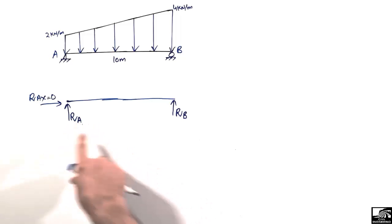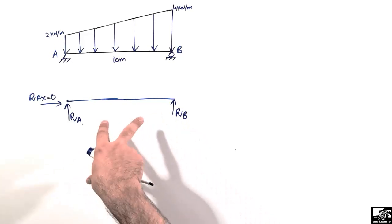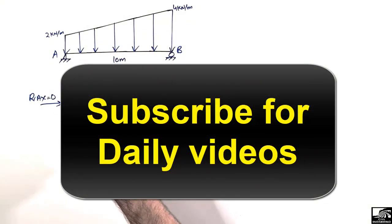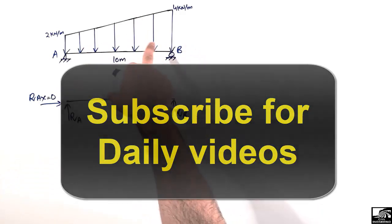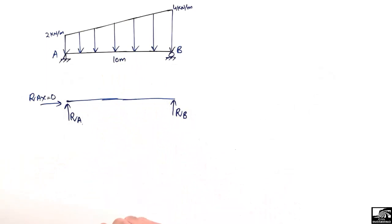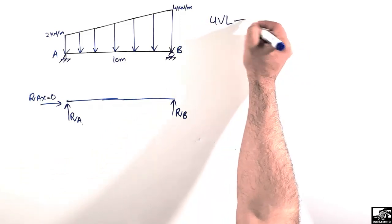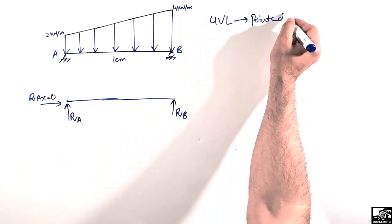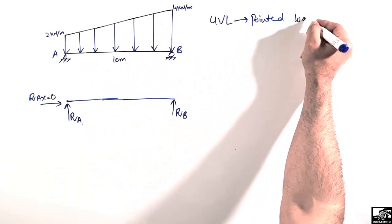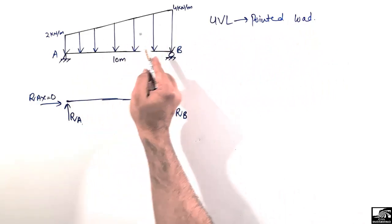We have only vertical support reactions, represented by RA and RB. To find these unknowns, we need to convert the uniformly varying load into a point load. We can divide the trapezoidal load into two parts: a rectangle (A1) and a triangle (A2).